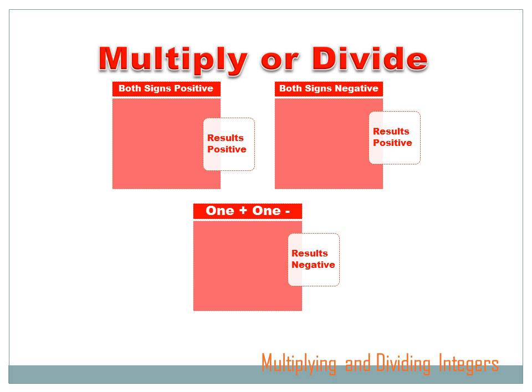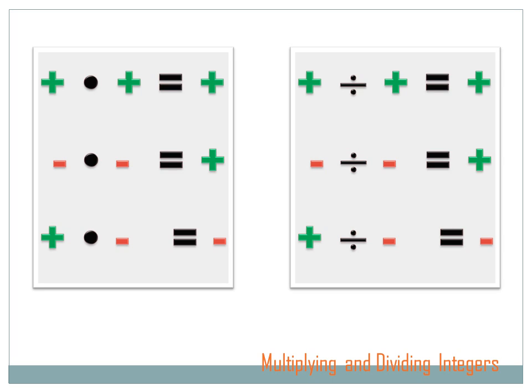If the signs of both the numbers you're working with are positive, then your answer will be positive. If the signs of both of the numbers you're working with are negative, then your answer will also be positive. If the signs of both of the numbers you're working with are different, one is positive and one is negative, then the answer is going to be negative. If both of the numbers you're either multiplying or dividing by are positive, the answer is going to be positive. If they're both negative, the answer is also positive.